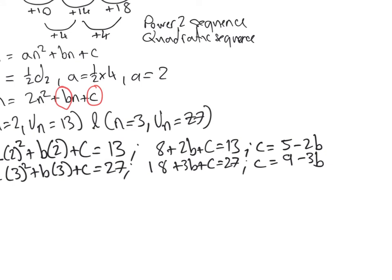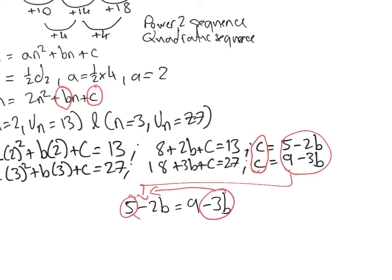So we know that if c equals c, then these have to equal that, which means we can bring them down here. And we can say 5 minus 2b equals 9 minus 3b. So rearrange. Which is the smallest value of b? That one, negative 3b. So we're going to move it that way. We're going to move the other number that way, which gives us 3b take away 2b equals 9 minus 5. So therefore, b equals 4.